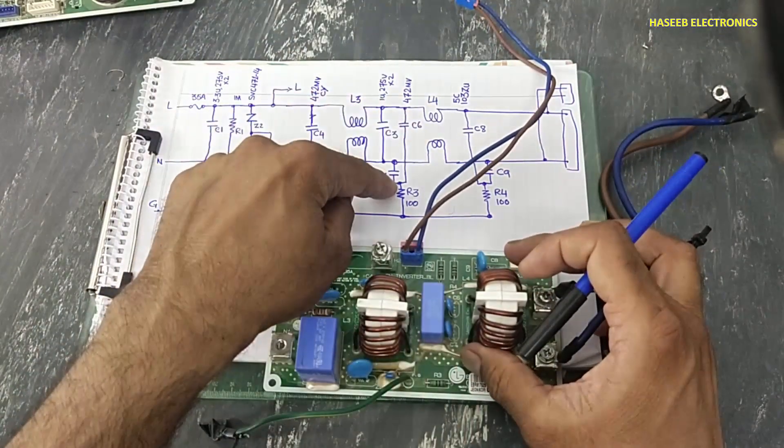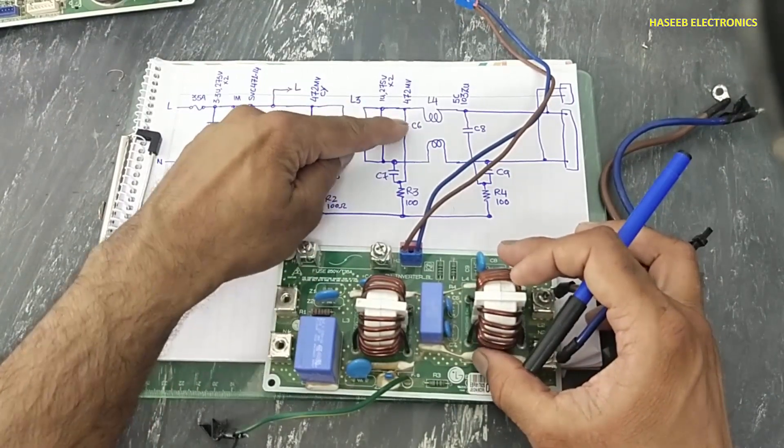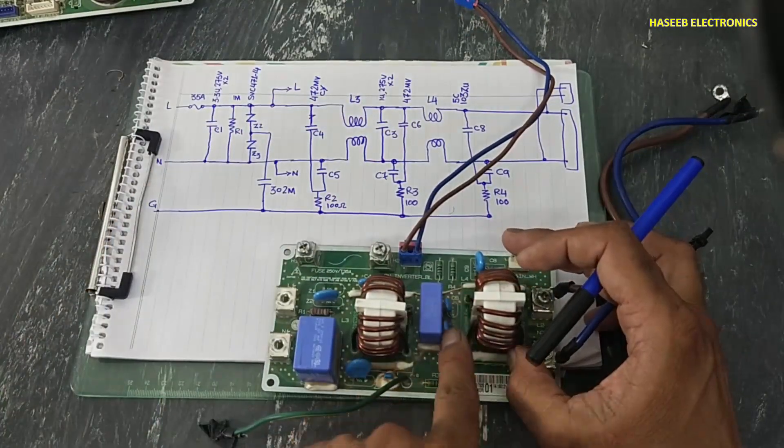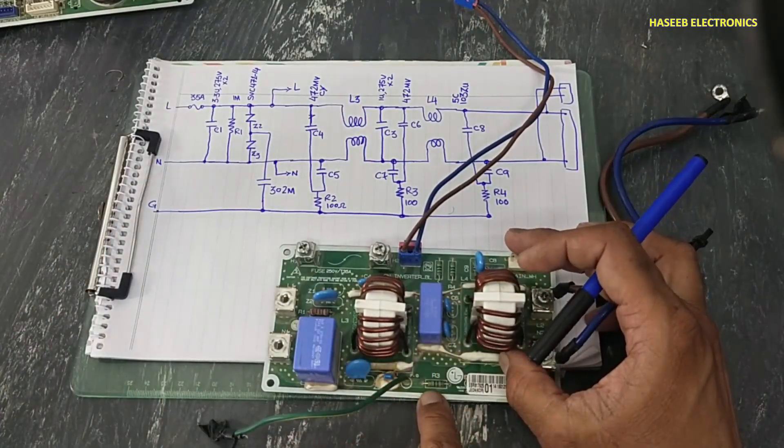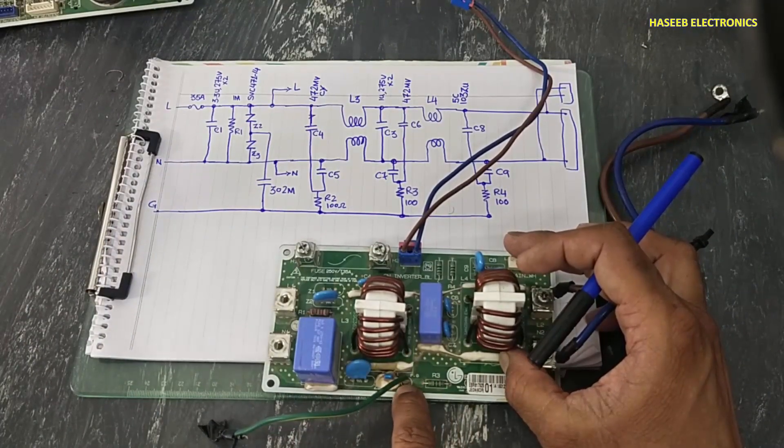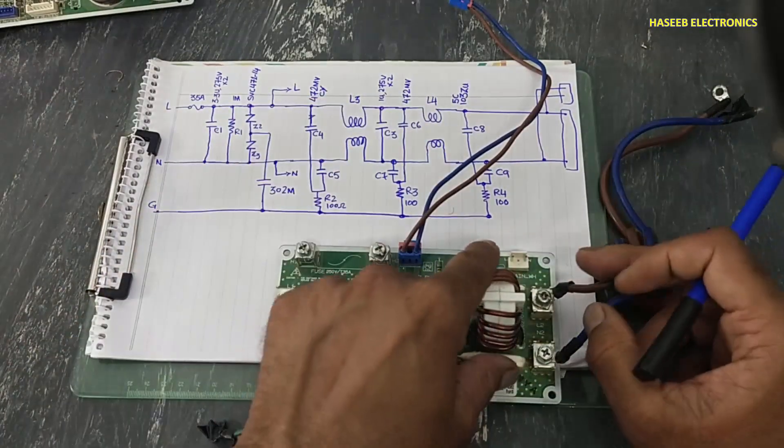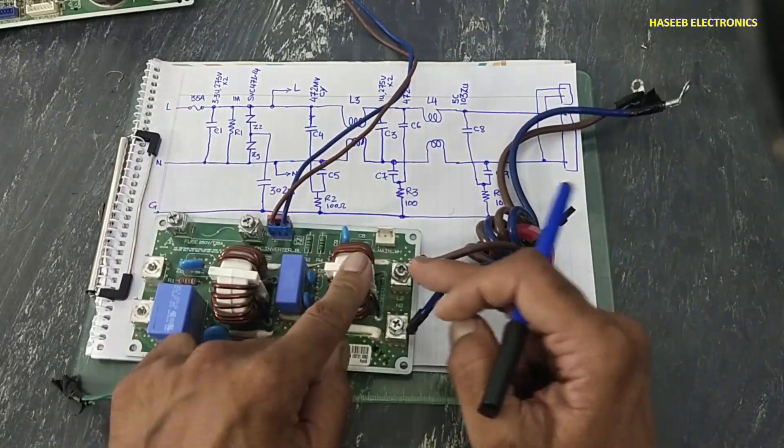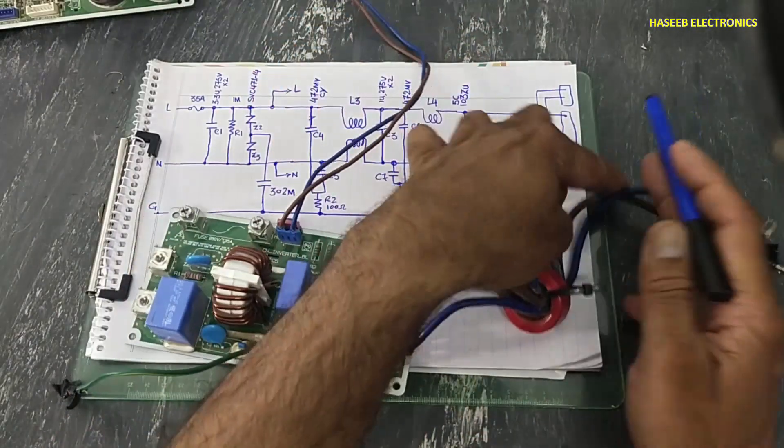Then we have common mode capacitors class Y capacitor C6 and C7 that are here with combination of R3. R3, the second end is connected to our sink point. Then we have next inductor L4, and this is output point.